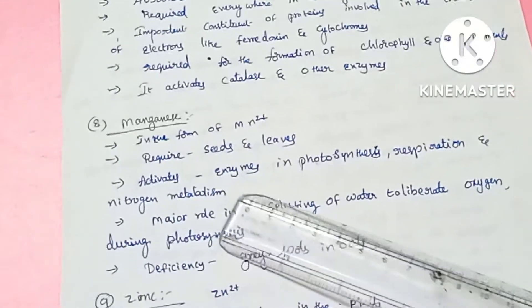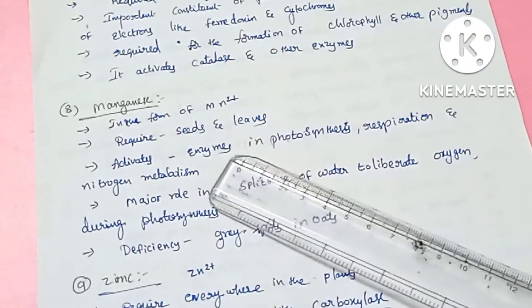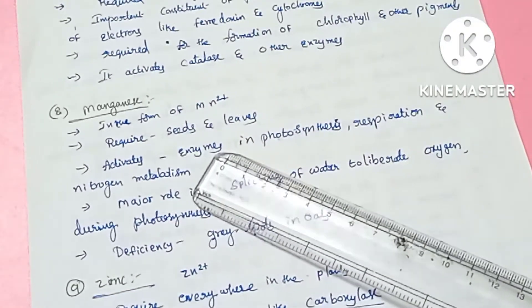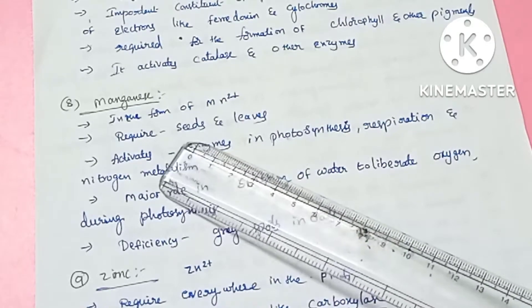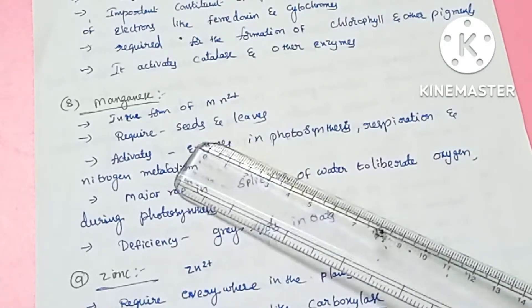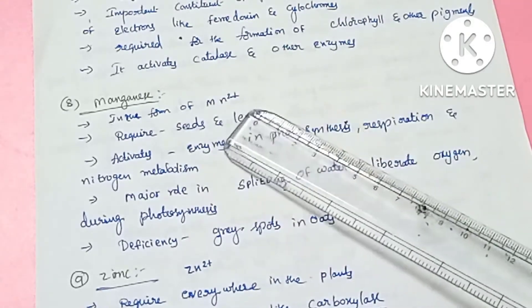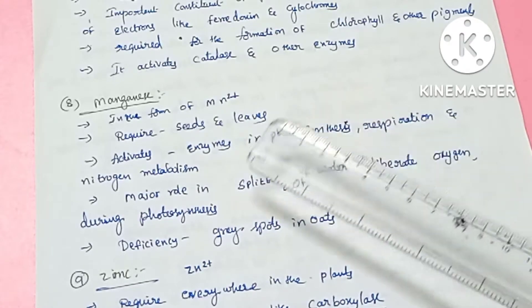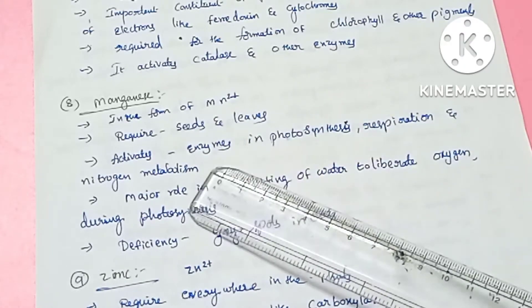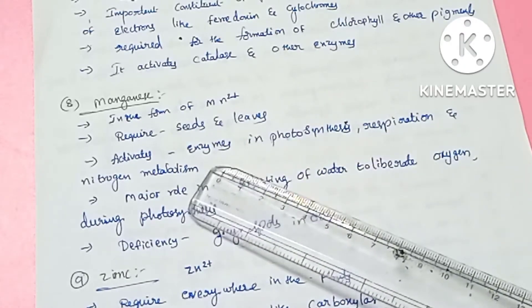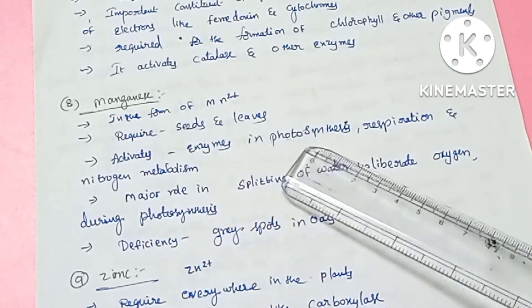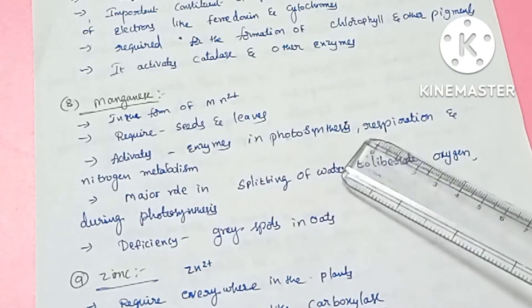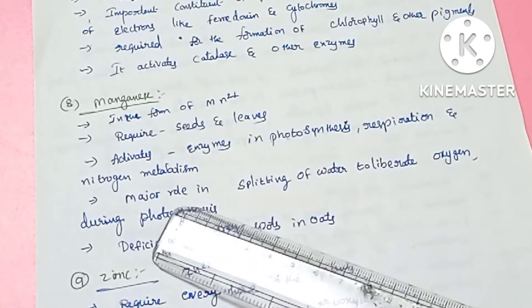The next element is manganese, absorbed in the Mn2+ form. Seeds and leaves are very important sites. Manganese activates enzymes involved in photosynthesis, respiration, and nitrogen metabolism.